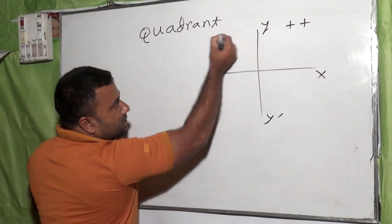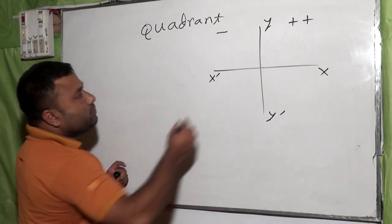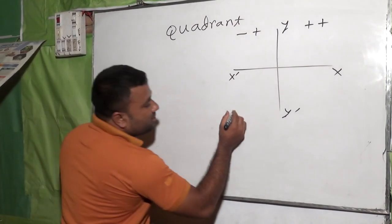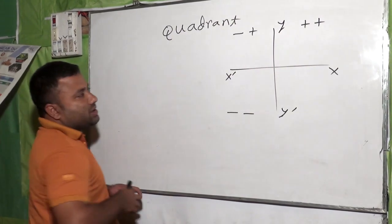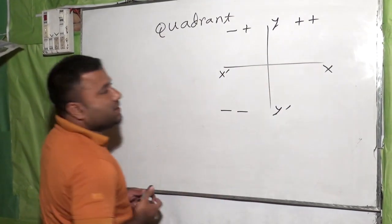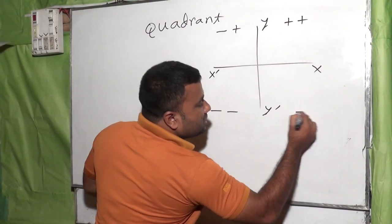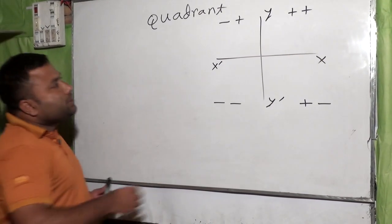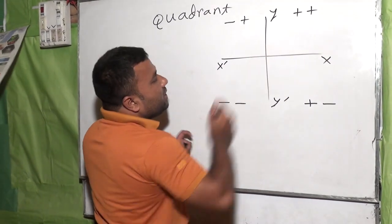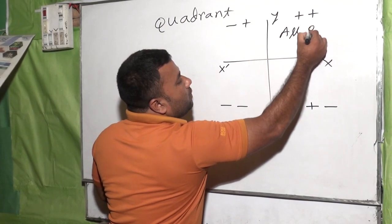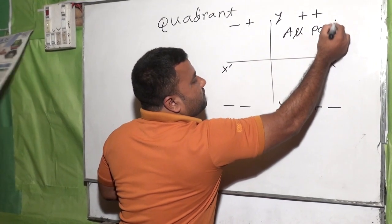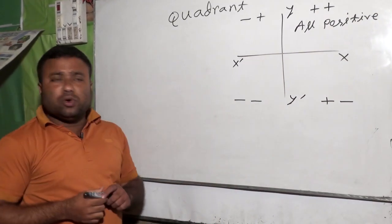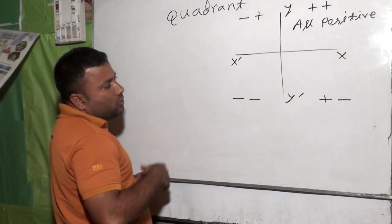That means x', that means y', that means y'. That means minus plus. That means x', that means y'. That means 2 — plus plus — this step we have to say all positive. That means we have the trigonometric unit path. We have to say the trigonometric unit path.